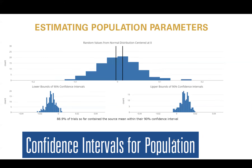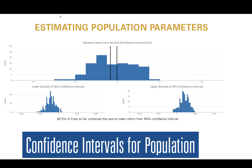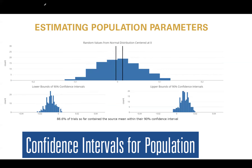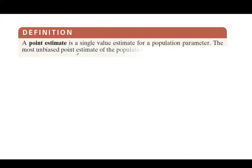In this video, we are working on the confidence interval for a population parameter — in this case, the population mean. Our very first definition is about what a point estimate is. A point estimate is a single value estimate for a population parameter. The most unbiased point estimate of the population mean, or mu, is the sample mean, denoted by x-bar.